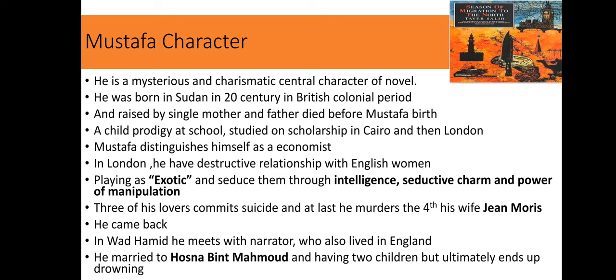Mustafa Saeed is the mysterious and charismatic central character of this novel. He was born in Sudan in the 20th century during the British colonial period and lived lavishly in London with an exotic personality. He had destructive relationships with English women, distinguishing himself as an economist and seducing them through intelligence and manipulation. Three of his English lovers committed suicide, and finally he murdered his fourth — his wife Jane Morris. He then returned to Wad Hamid, started a new life, married Hosna bint Mahmoud, and had two young sons.